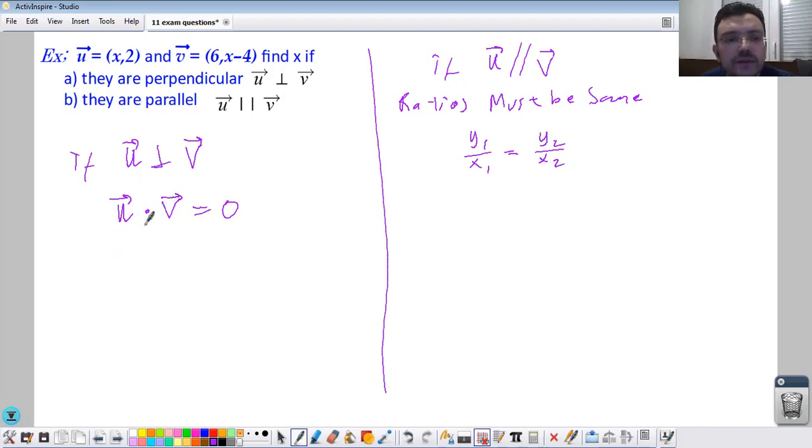Let's start with the dot product rule. You need to remember, you multiply the x numbers by each other, which is x times 6, and then plus you multiply the y values by each other, which is 2 times in parentheses x minus 4.